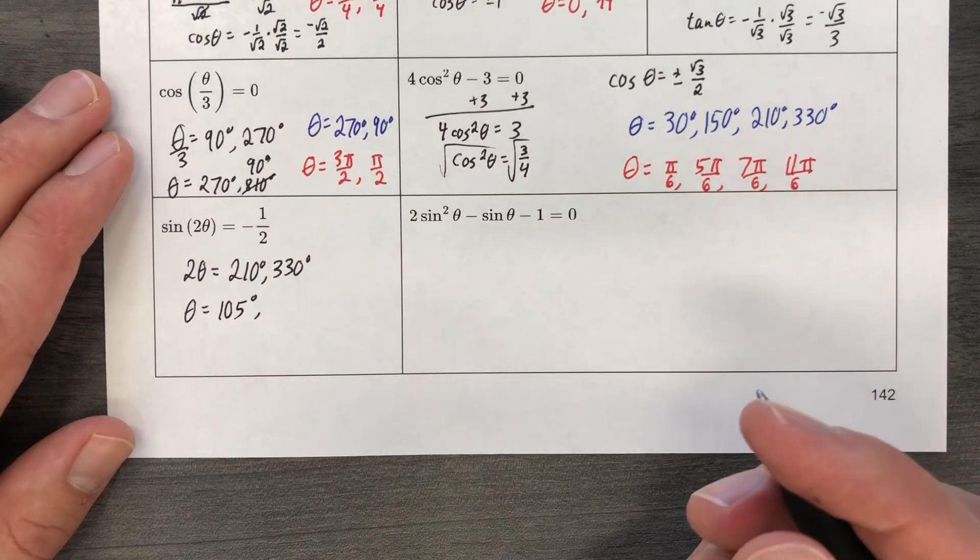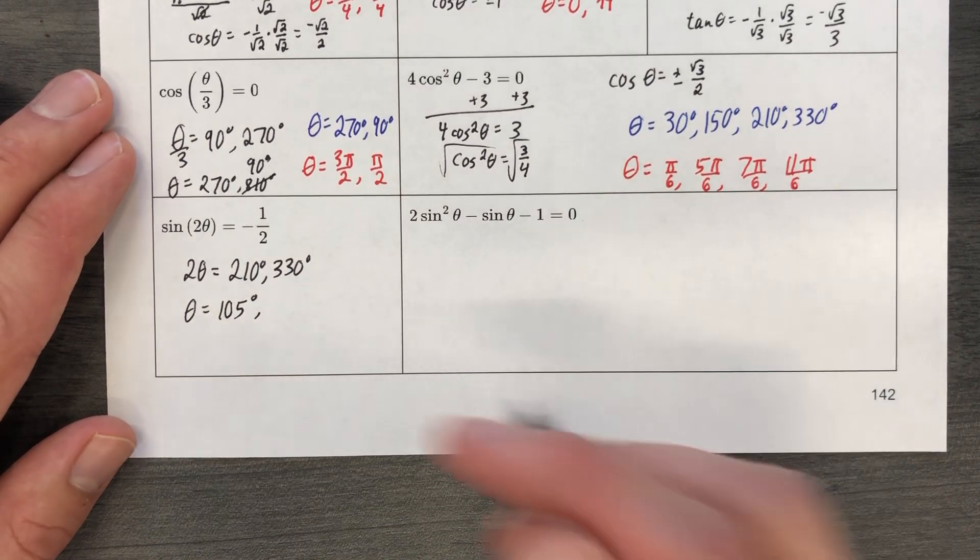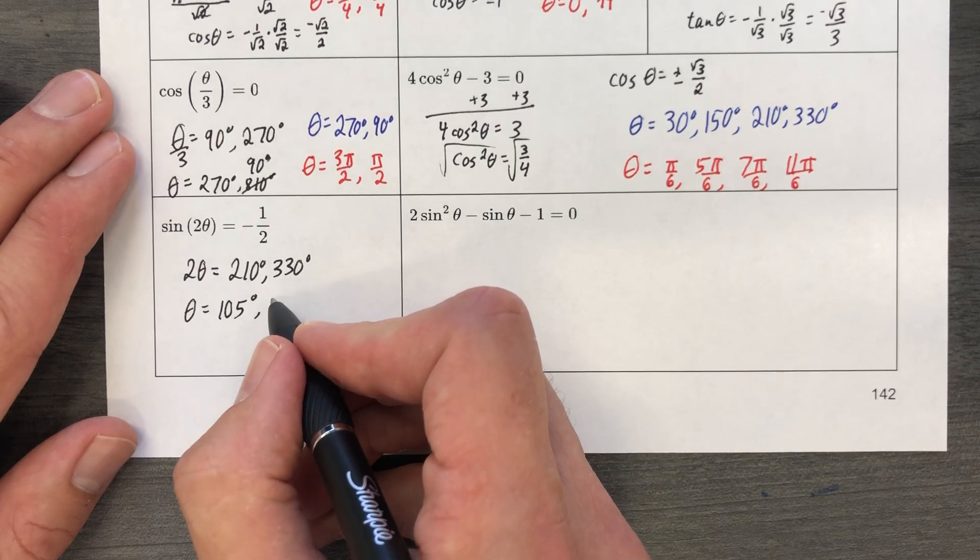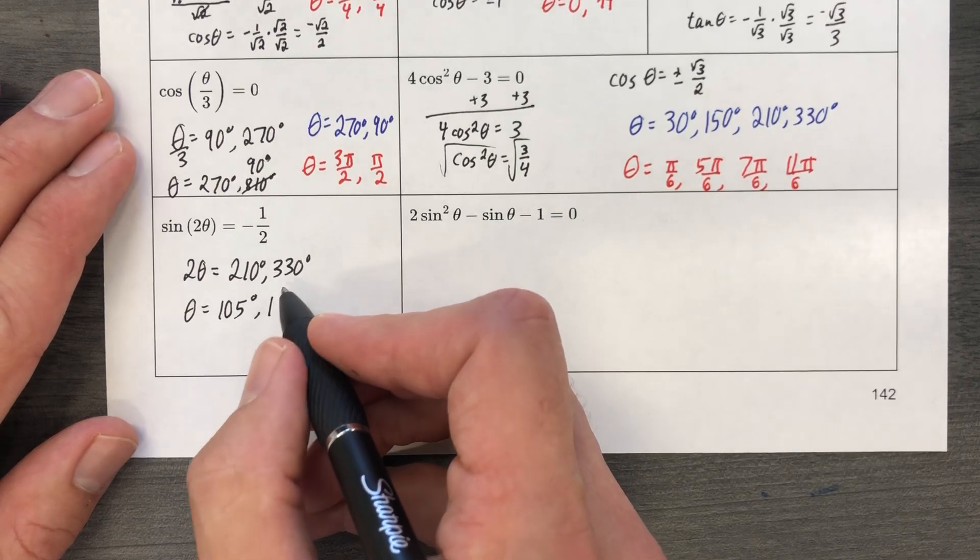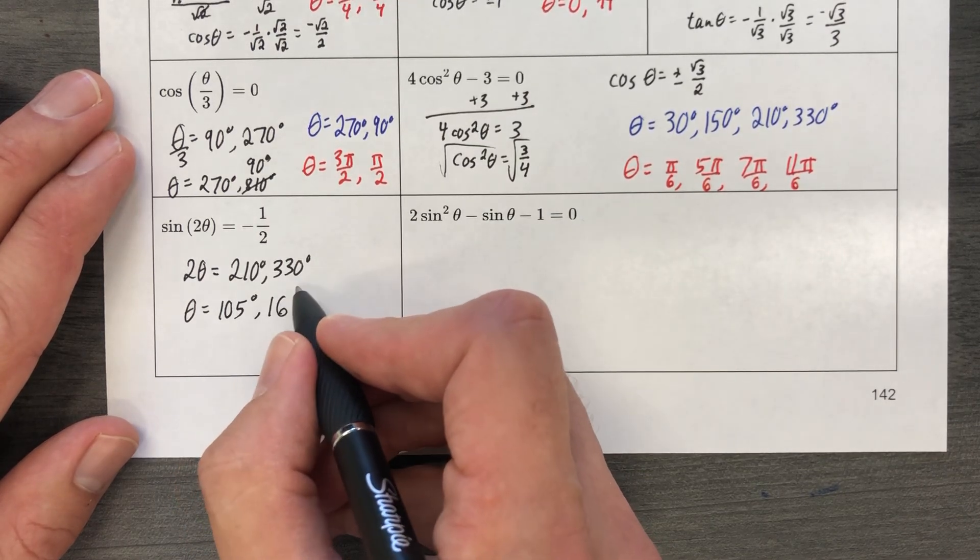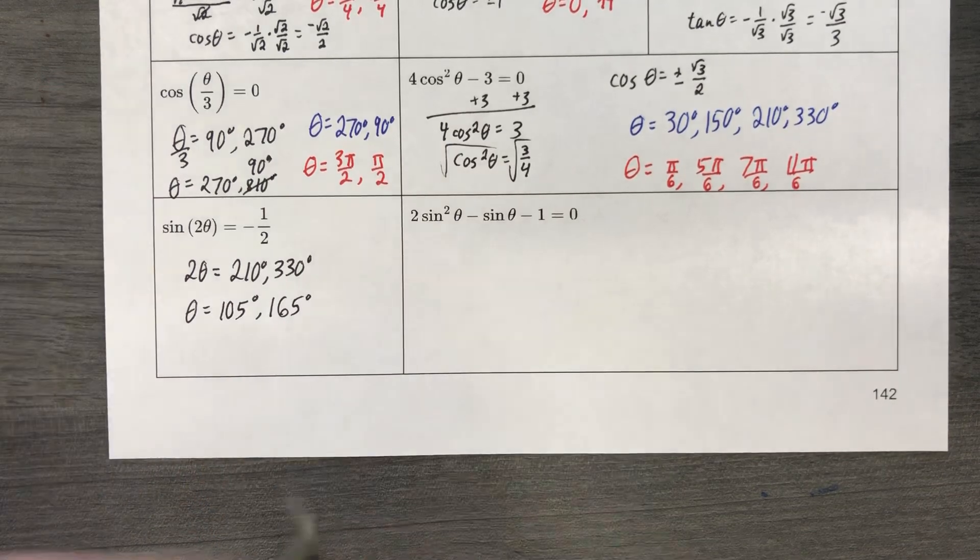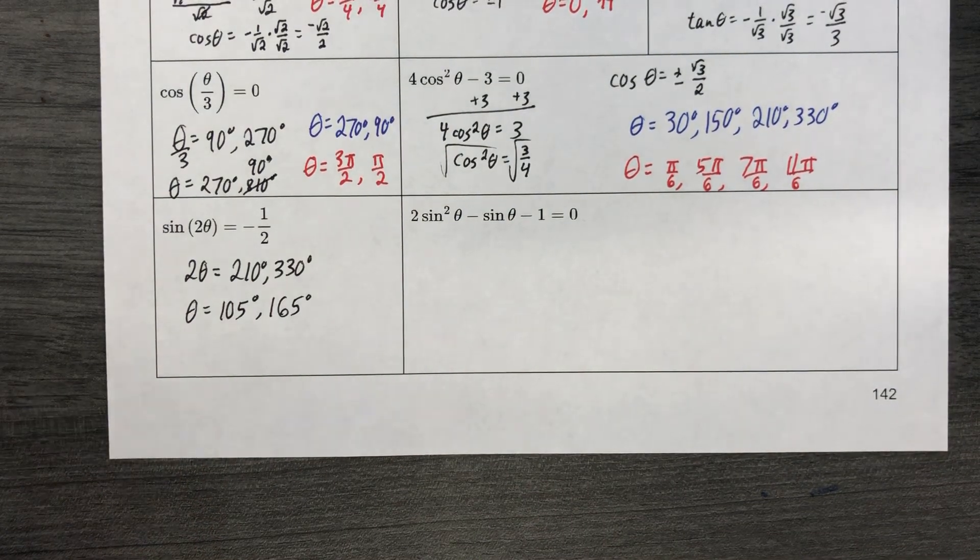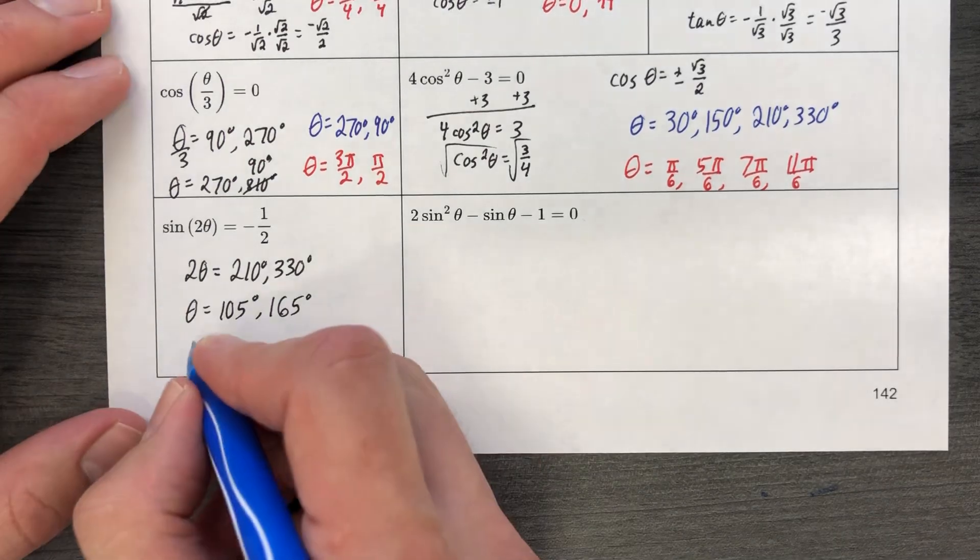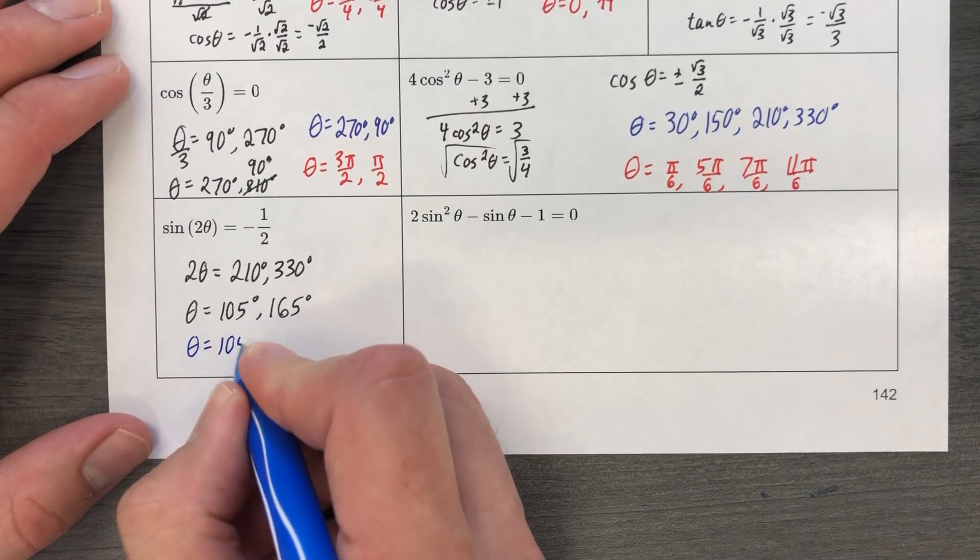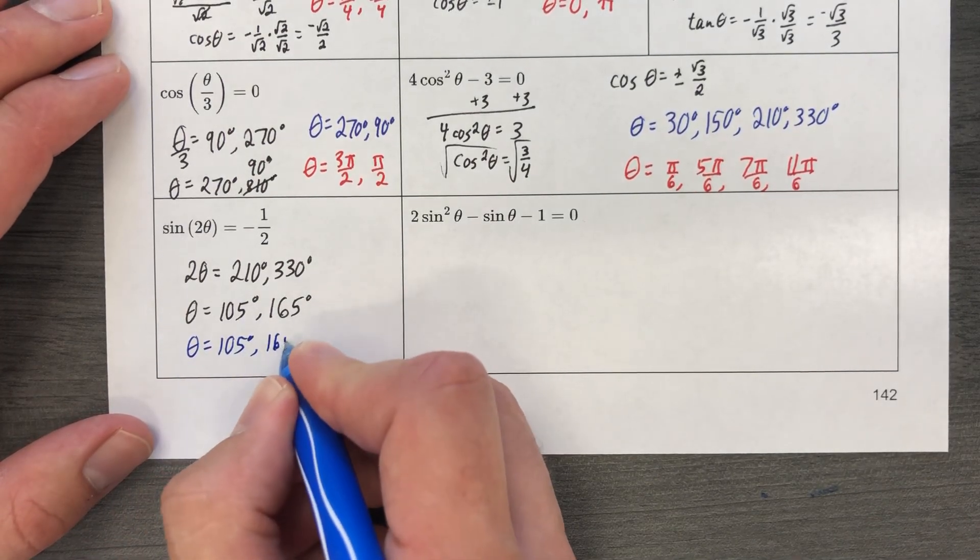330 divided by 2 is going to give me 165. That's great. So my final answers, I should have written that in blue because it was a final answer. 105 degrees, 165 degrees.